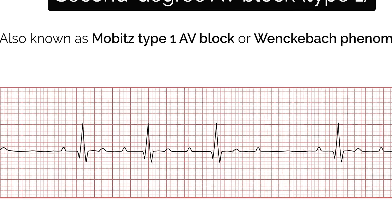This ECG shows a Wolff-Parkinson-White pattern, which is typically associated with Wolff-Parkinson-White syndrome. In Wolff-Parkinson-White, an accessory pathway leads to stimulation of the ventricles, enabling electrical conduction to bypass the AV node and stimulate the proximal ventricles prematurely — we call this pre-excitation. This, in addition to normal electrical conduction through the AV node, leads to double excitation of the ventricles. On this ECG we can see a shortened PR interval, a delta wave and a widened QRS complex. A delta wave is a slurred upstroke of the QRS. Patients with Wolff-Parkinson-White syndrome are at risk of developing tachyarrhythmias, which are abnormal heart rhythms with a ventricular rate of 100 or more beats per minute.